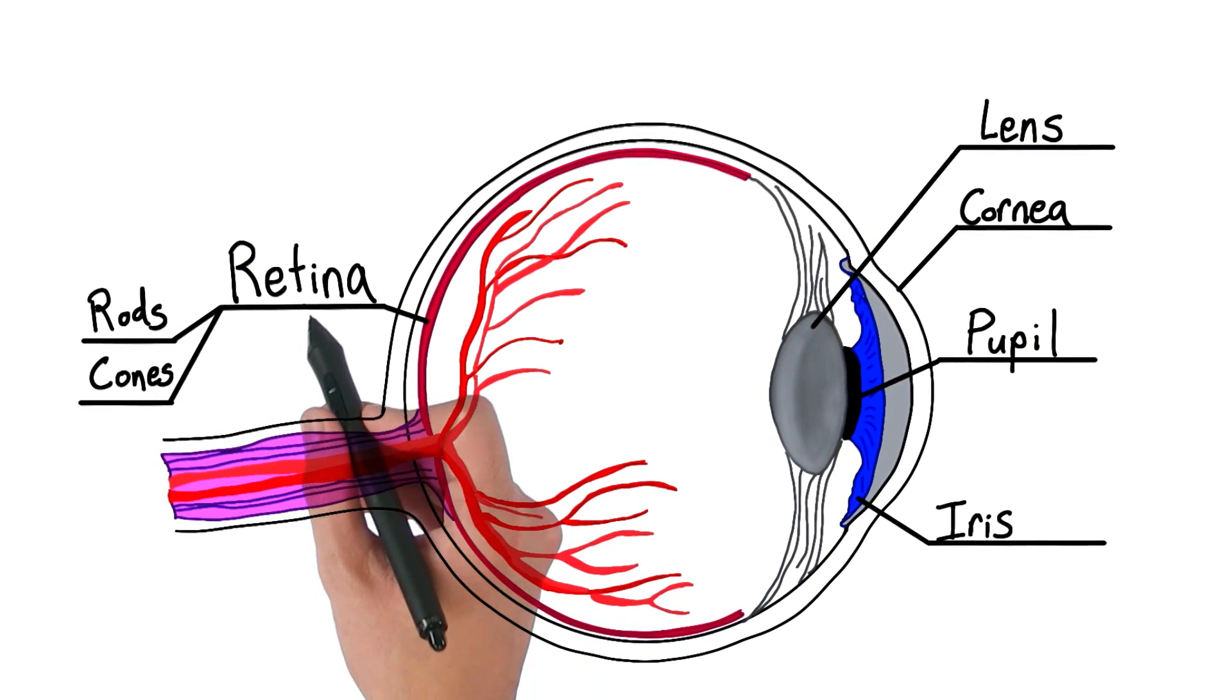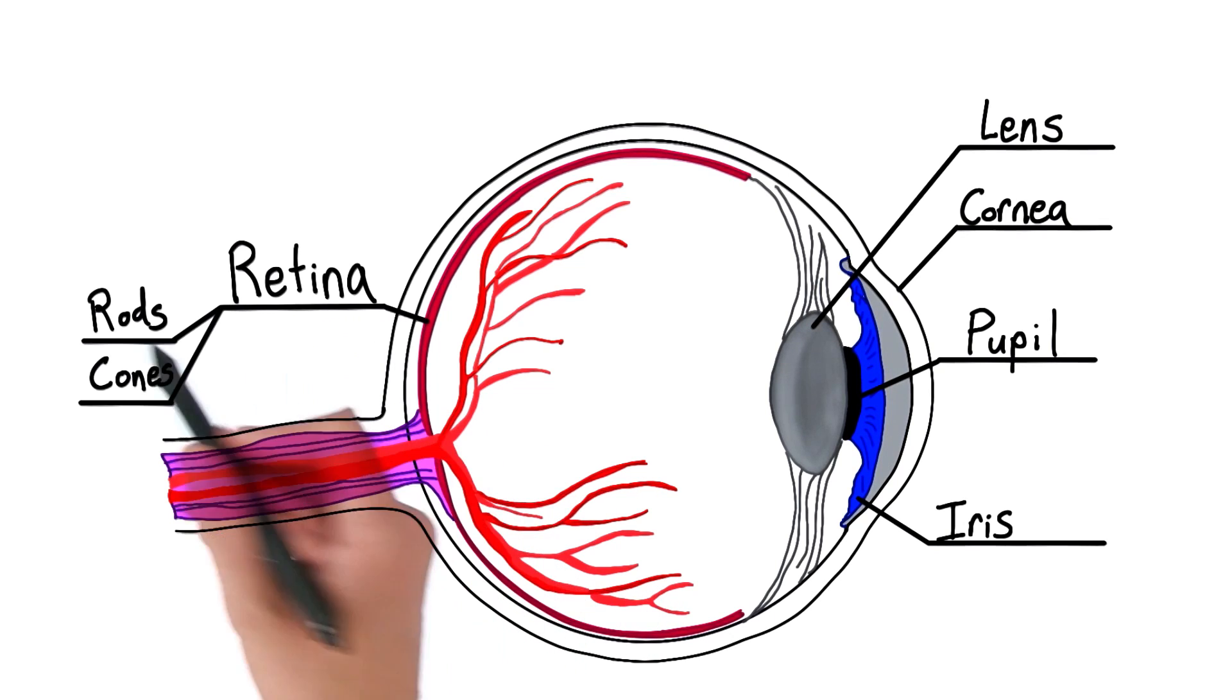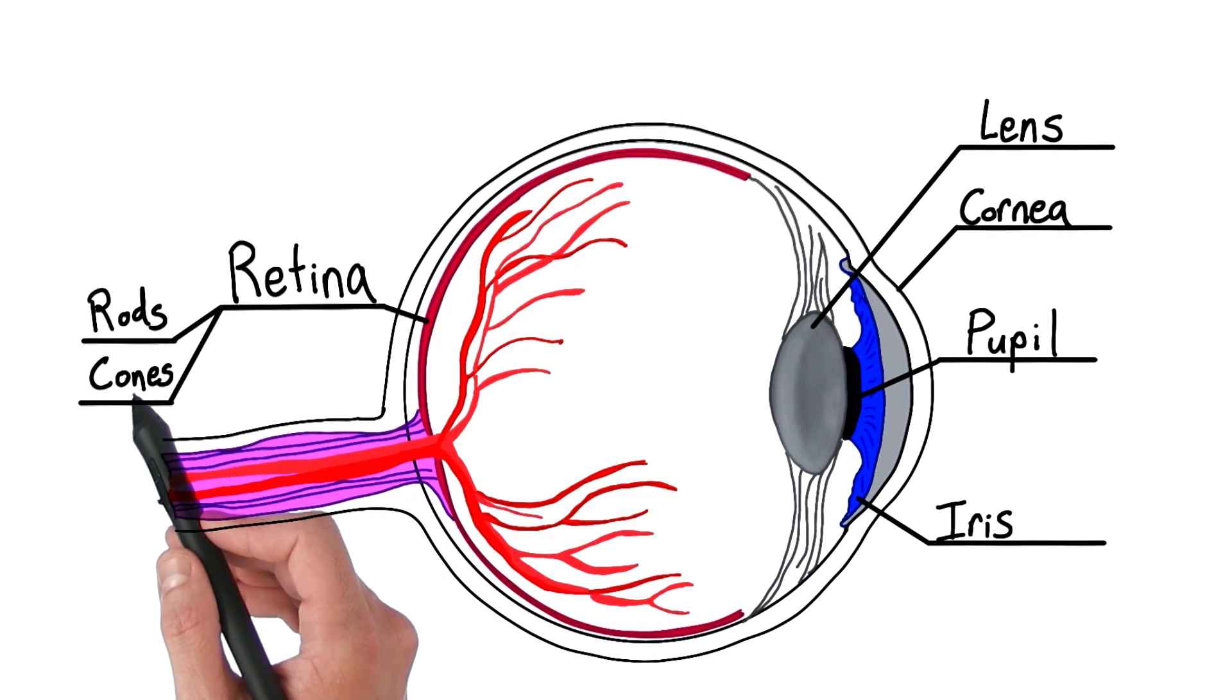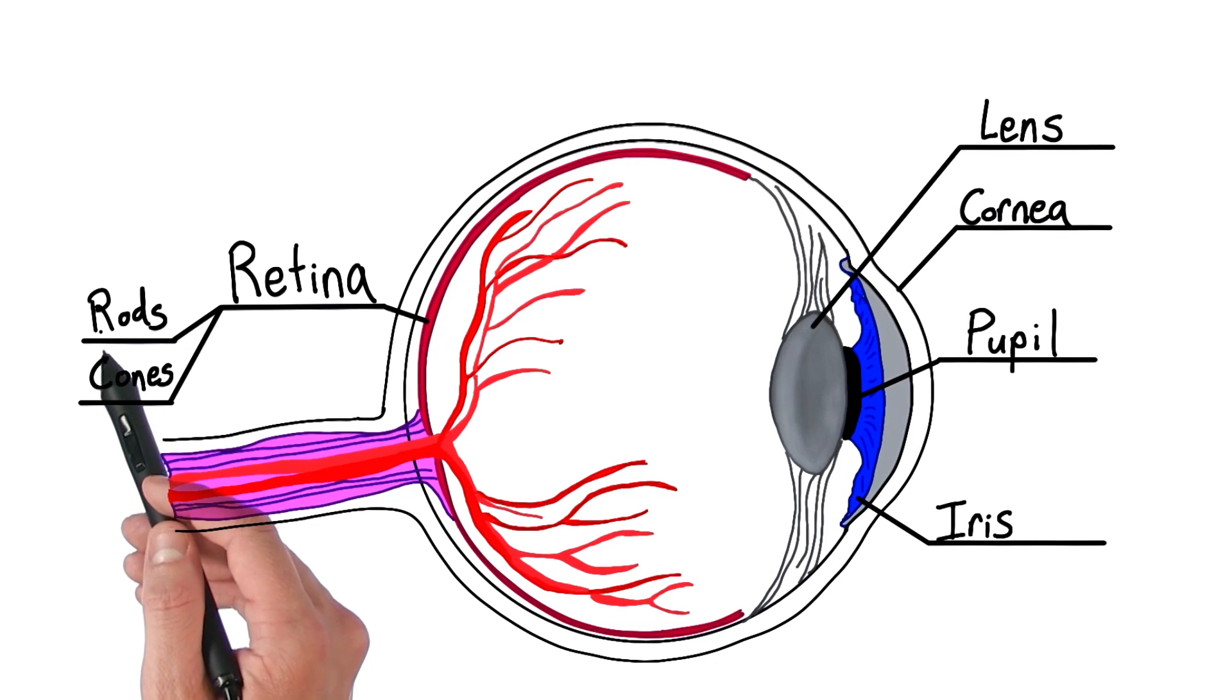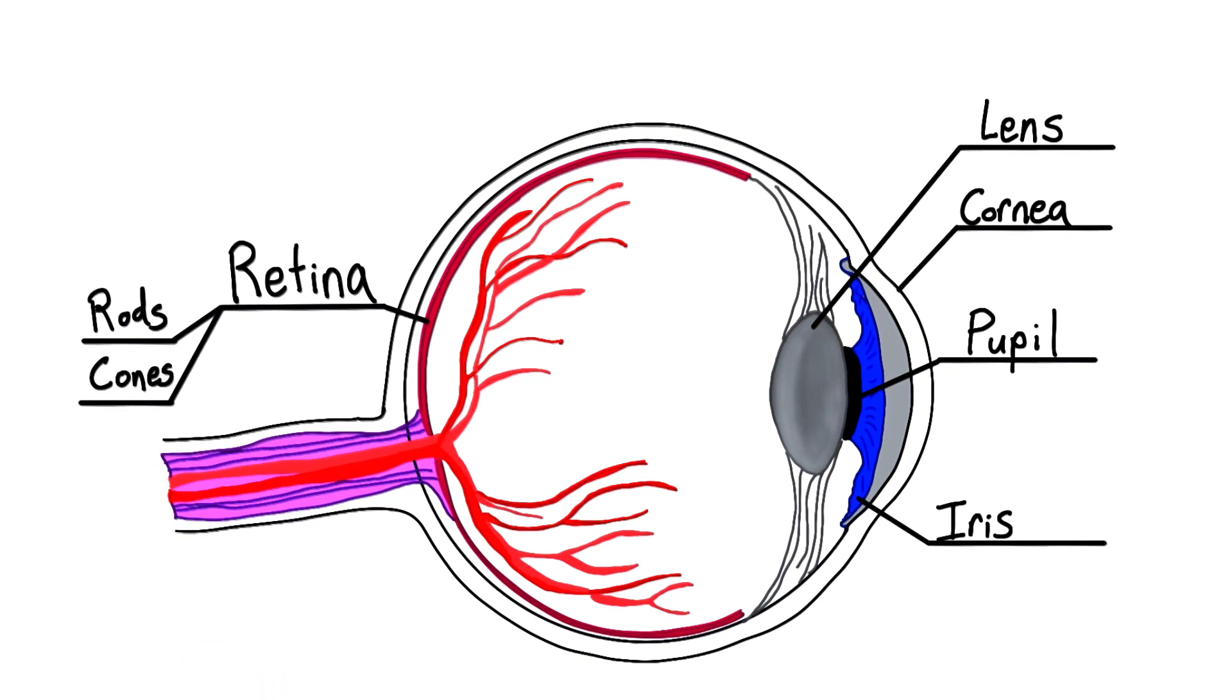And so, this retina actually contains many layers of these rods and cones. Rods, photoreceptor cells—photo means light, receptor means to receive—they're actually sensitive to primarily black and white vision, and they help us see at night time.